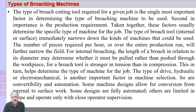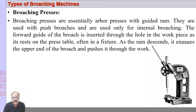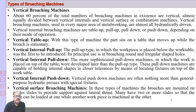Types of broaching machines include: first, the manual broaching press, mainly used to remove very small material such as cutting keyways in gears. Then we have vertical broaching machines, which can be of various types: vertical table up (where the table moves and the broach tool remains stationary), internal pull-up, internal pull-down, vertical internal push-down, and vertical surface broaching.